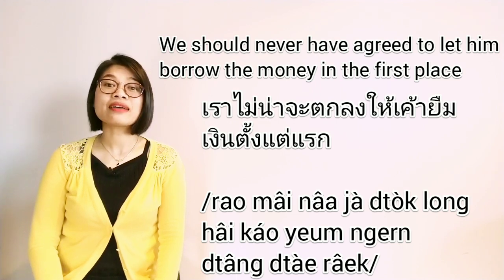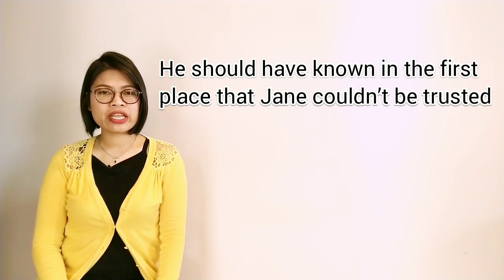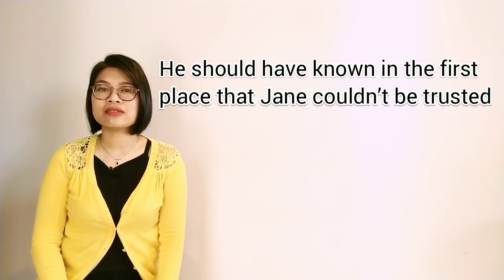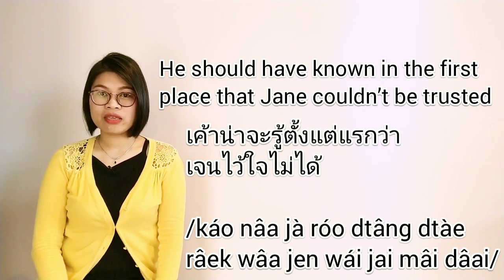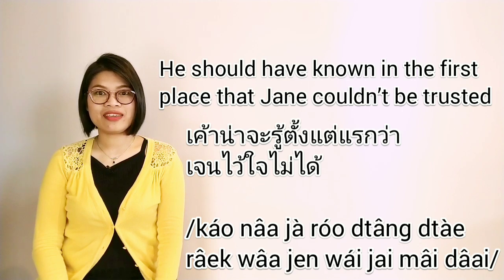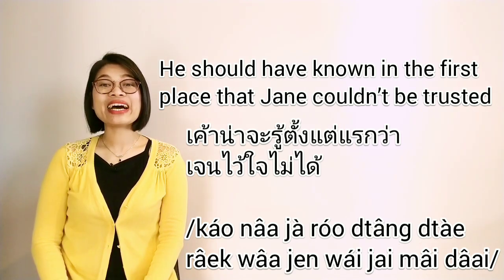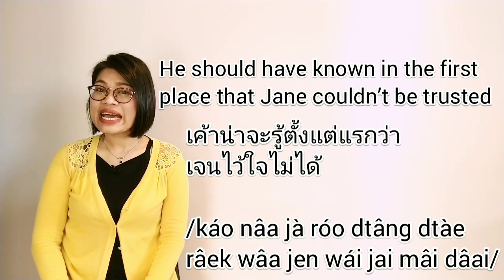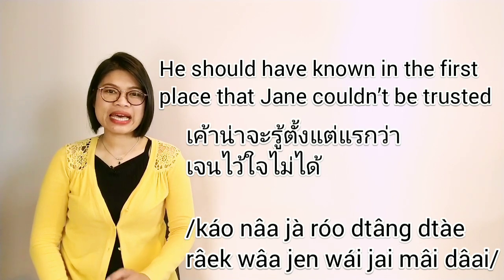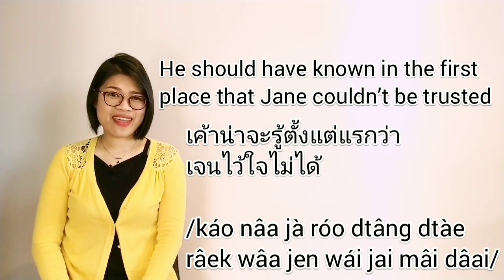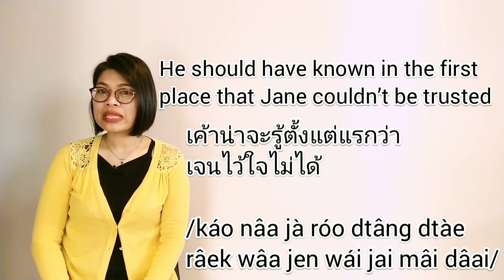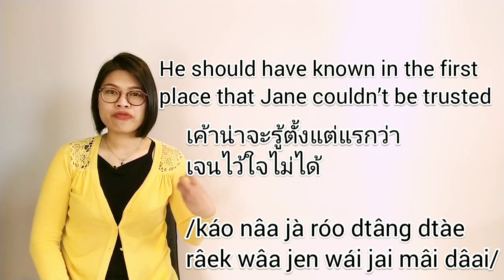Next: 'He should have known in the first place that Jane couldn't be trusted.' In Thai: เขาน่าจะรู้ตั้งแต่แรกว่าเจนไว้ใจไม่ได้. เขา is 'he,' น่าจะรู้ means 'should have known' — น่าจะ for 'should have done' plus รู้ meaning 'to know.' Then ตั้งแต่แรก 'in the first place,' followed by ว่า to introduce what he should have known.